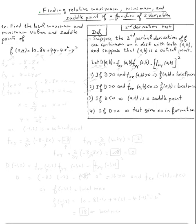The topic is finding relative maximum, minimum, and saddle points of a function of two variables. Relative max and local max mean the same thing. So let's do this example: find the local maximum and minimum values and saddle points of f(x, y) = 10 - 8x + 4y - 4x² - y².